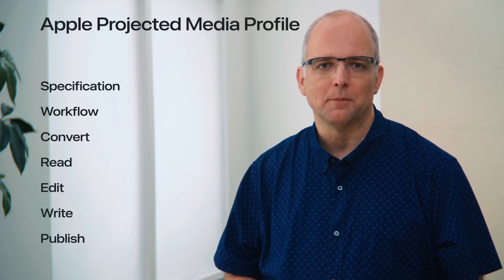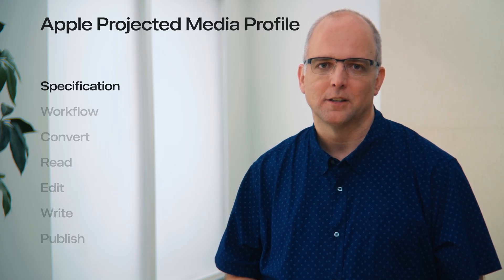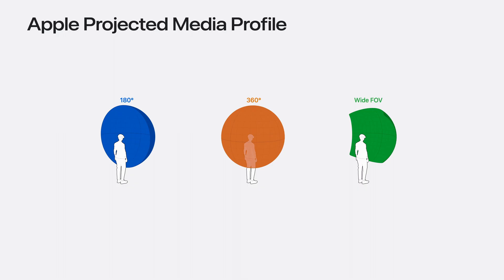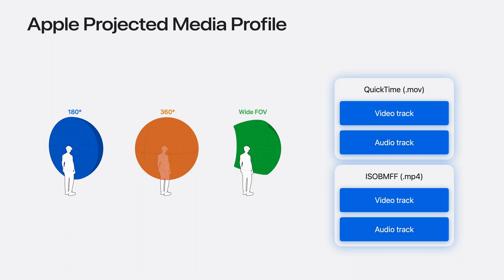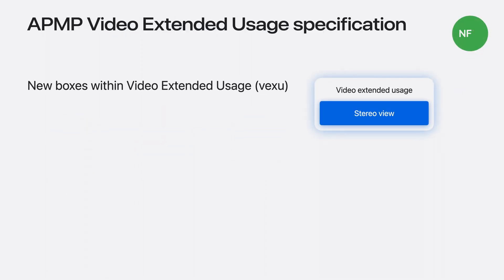I'll start by describing how APMP video is carried in QuickTime and MP4 movie files. Apple Projected Media Profile enables signaling of 180, 360, and wide FOV in QuickTime and MP4 files. QuickTime files are structured as a hierarchy of containers of various types of media data, and can include audio and video tracks, as well as data describing the details of each track. The ISO-based media file format, or ISO-BMFF specification for MP4, was adapted from QuickTime. The fundamental unit of data organization in an ISO-BMFF file is a box. For VisionOS 1, we introduced a new video extended usage extension box with stereo view information indicating stereoscopic or monoscopic content. For VisionOS 26, we add new boxes to video extended usage, also known as VEXU, to enable signaling of the projected media profile.